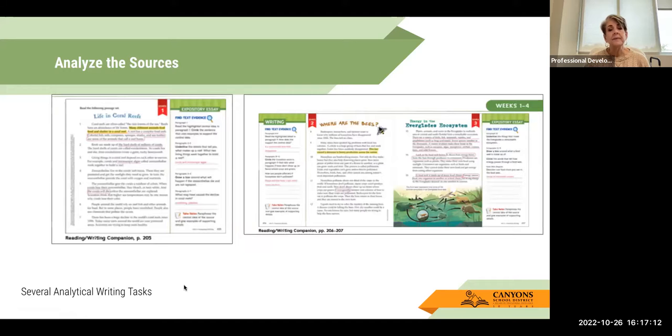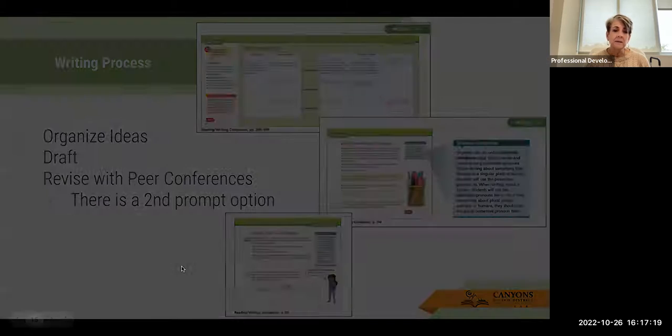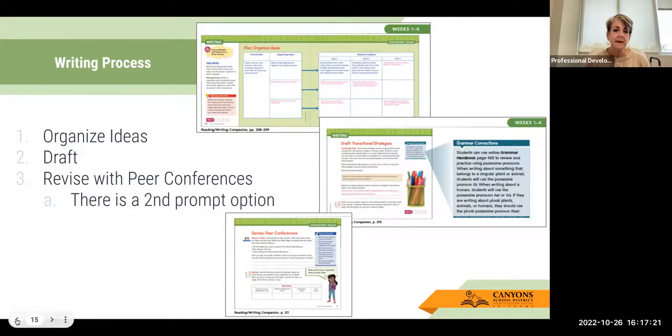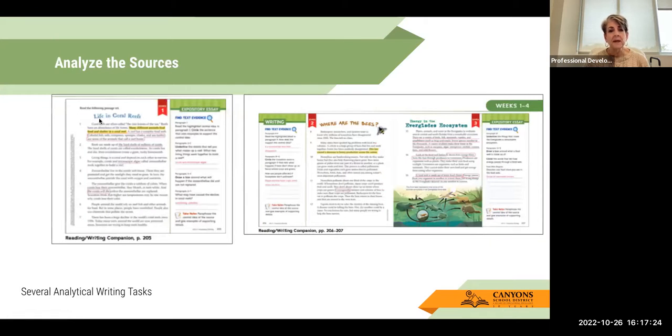Then they will be sources. So now they're getting a new piece of text that they can compare. And here they have a prompt. Here they have a prompt where they are looking at these sources. So here we have life in the coral reef because they're talking about habitats. And then where are the bees and Everglade ecosystems? So we have three components here for them to get resources to be able to talk about and analyze their prompt.